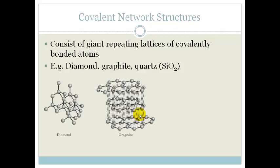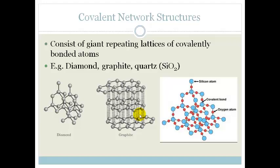For example, you've got diamond, graphite, and quartz. So what's special about diamond and graphite is they're both made only of carbons. But if you look here, you can see that the way the carbons are bonded compared to how they're arranged here is completely different.